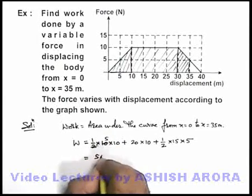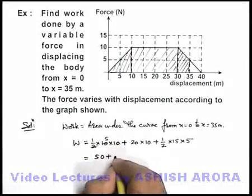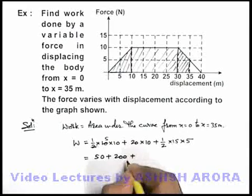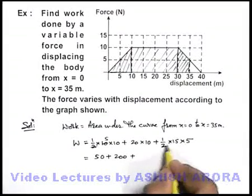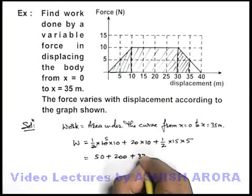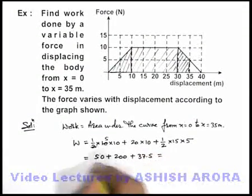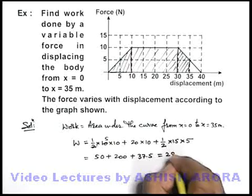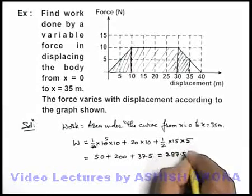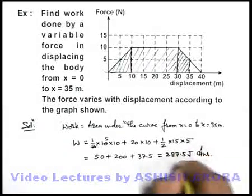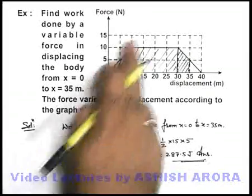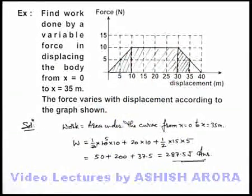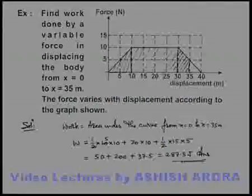If we just calculate it we can see it will be fifty plus two hundred plus thirty seven point five, and if we just sum it up it will be two eighty seven point five joule. That will be the answer to this problem that we can very easily calculate. We have calculated it just by calculating the area under this curve. Thank you.